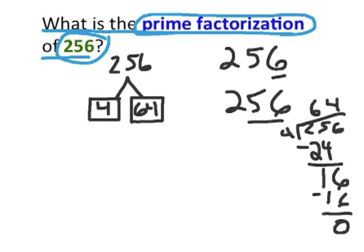For example, 4, we can multiply 2 times 2 in order to get 4. And 64, what two numbers can we multiply to get 64? We can multiply 8 times 8. So we found now two more factors of these numbers.